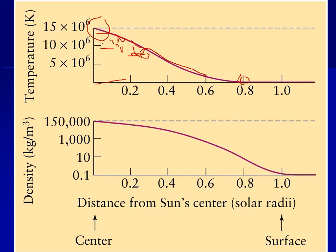In the outer convective zone it's a little different. There's more of a flat temperature gradient, so you heat the gas, it expands, and as it rises it cools off, but not as quickly as the surrounding material. So you get convection, and that tends to smear out the temperature in that zone.